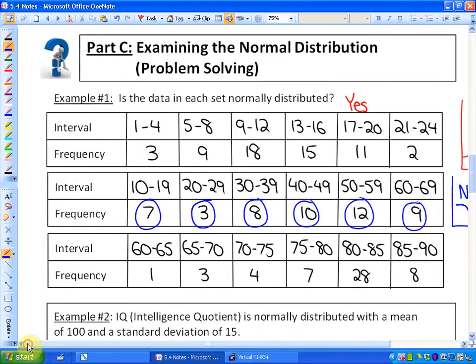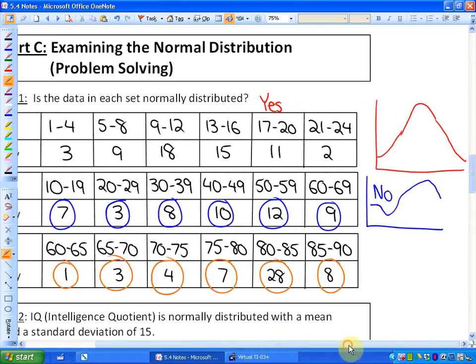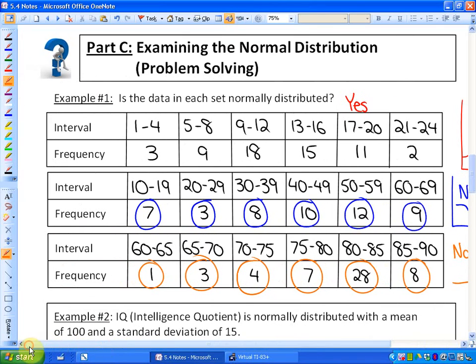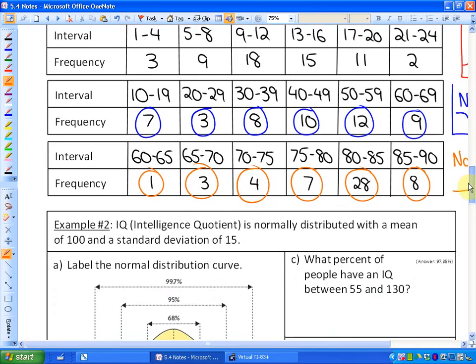And in the last one, what you'll notice is it goes 1, 3, so the frequencies are increasing up to 28, and then go down to 8. So they do increase and then decrease, but would this be symmetrical? I don't think so, because 28 happens the most, so it would look more like this. And that's not symmetrical, although it goes up and down. So the answer here, as far as normal distribution, would be no. Okay? So that's an introduction to normal distribution.